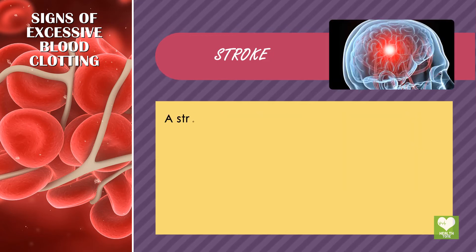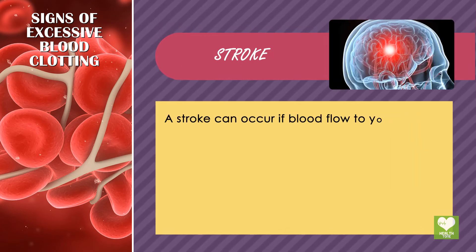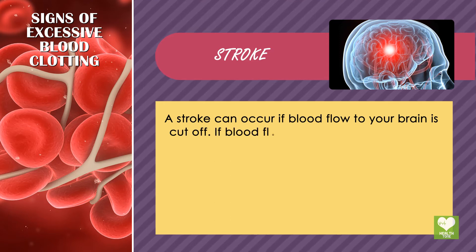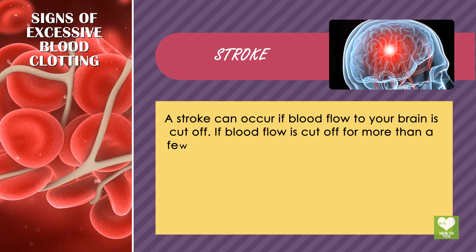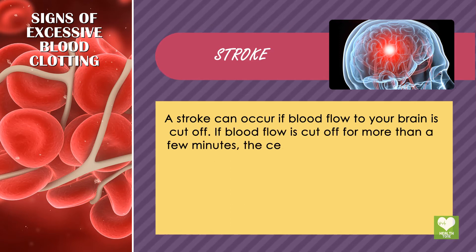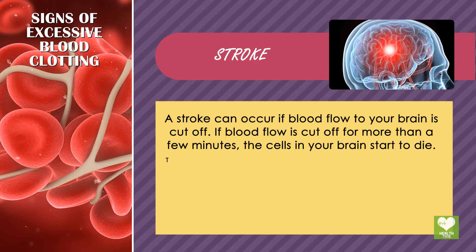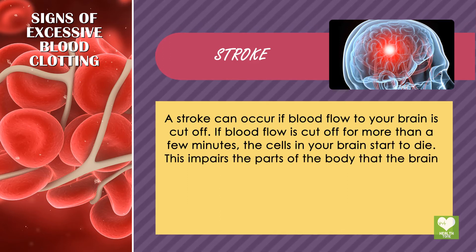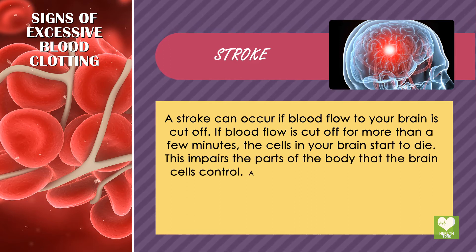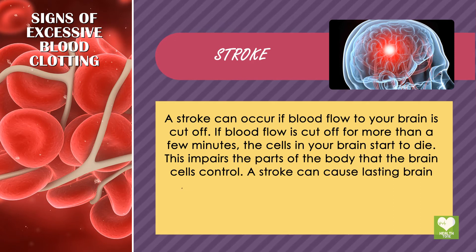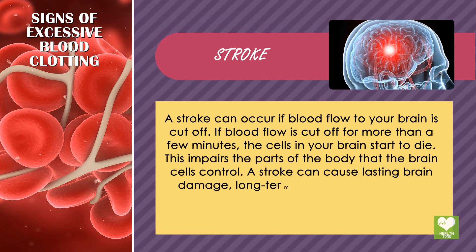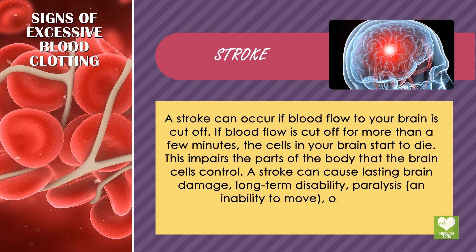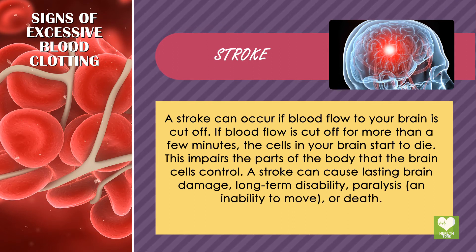Stroke. A stroke can occur if blood flow to your brain is cut off. If blood flow is cut off for more than a few minutes, the cells in your brain start to die. This impairs the parts of the body that the brain cells control. A stroke can cause lasting brain damage, long-term disability, paralysis, inability to move, or death.